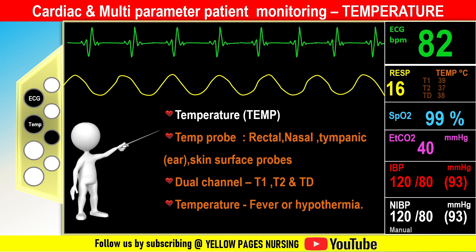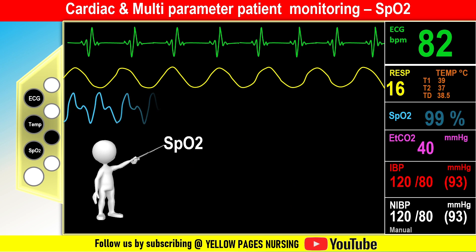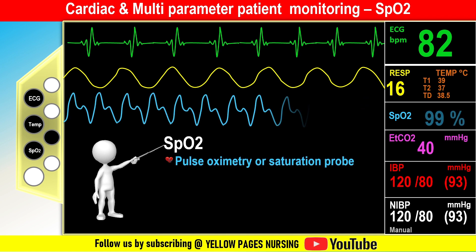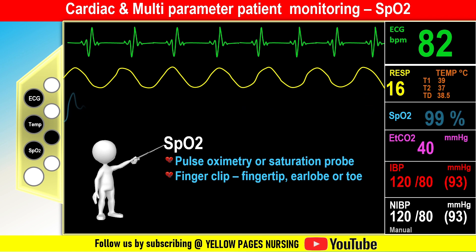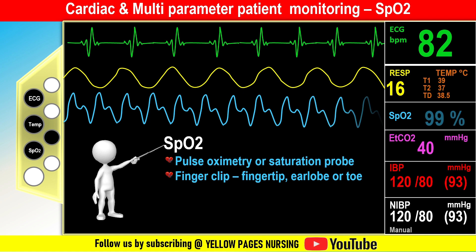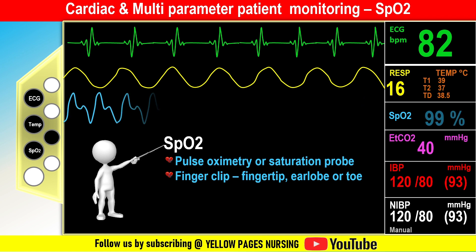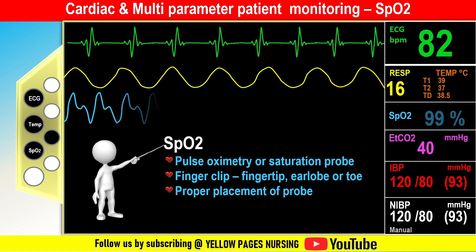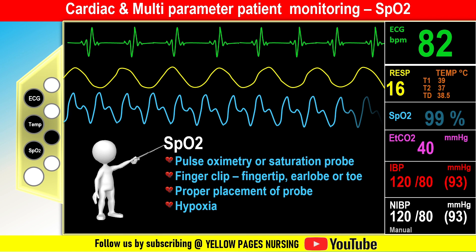SpO2 — oxygen saturation — is measured using a pulse oximetry or saturation probe to measure the patient's oxygen saturation levels, providing information about respiratory function. Measurement ranges from 0 to 100 percent. The most common method is a finger clip sensor placed on the patient's fingertip; other sites such as ear lobe or toe can also be used. Nursing considerations: ensure proper sensor placement, assess skin perfusion, respond to low oxygen saturation promptly, and recognize factors affecting accuracy such as nail polish or poor perfusion.